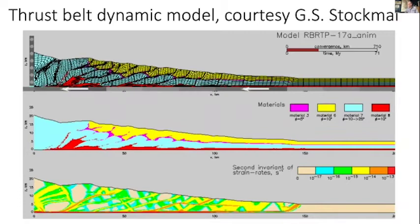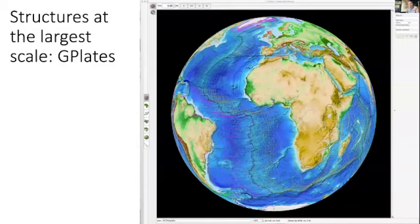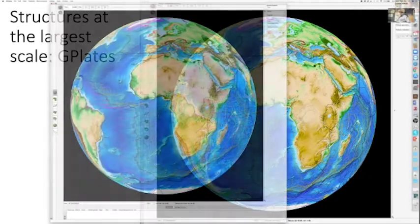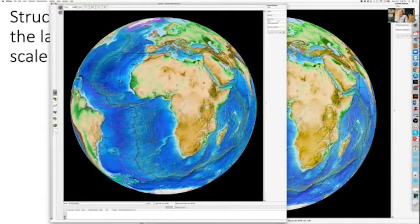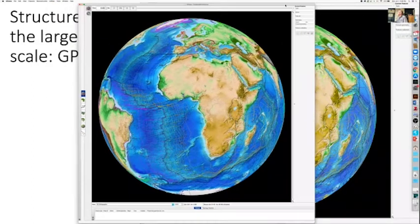We actually work at a great range of scales in EAS 421, starting with the global scale. This is a slide produced by a program called G-Plates. Here we are in G-Plates, and G-Plates is a neat program. It's available for free. It's in the public domain.